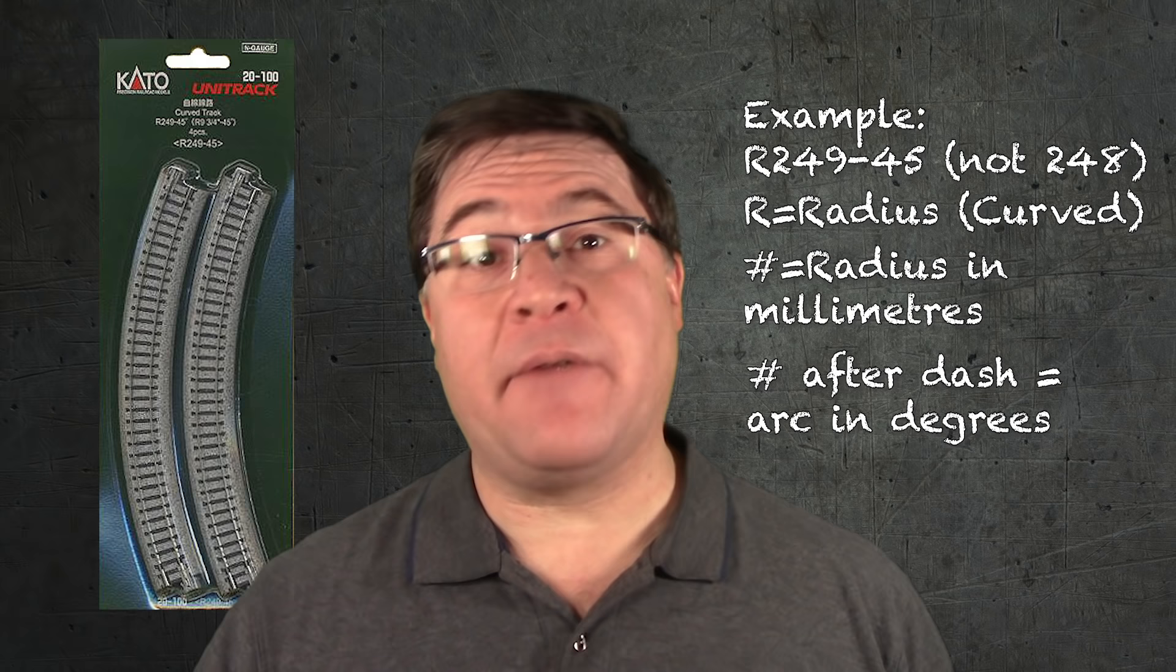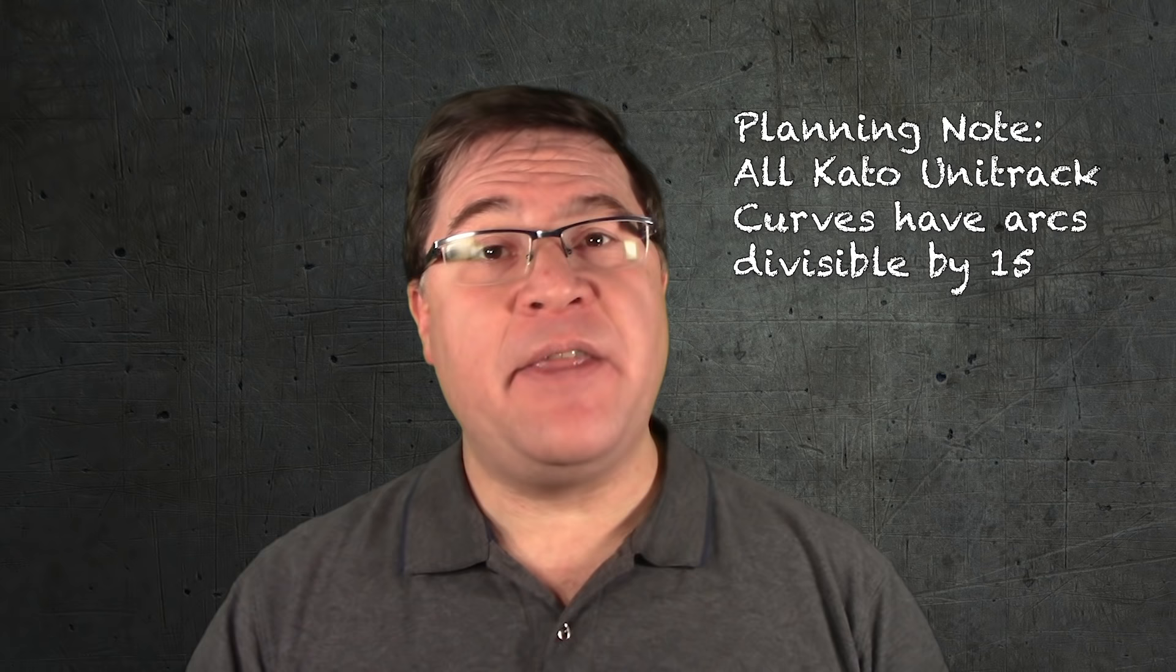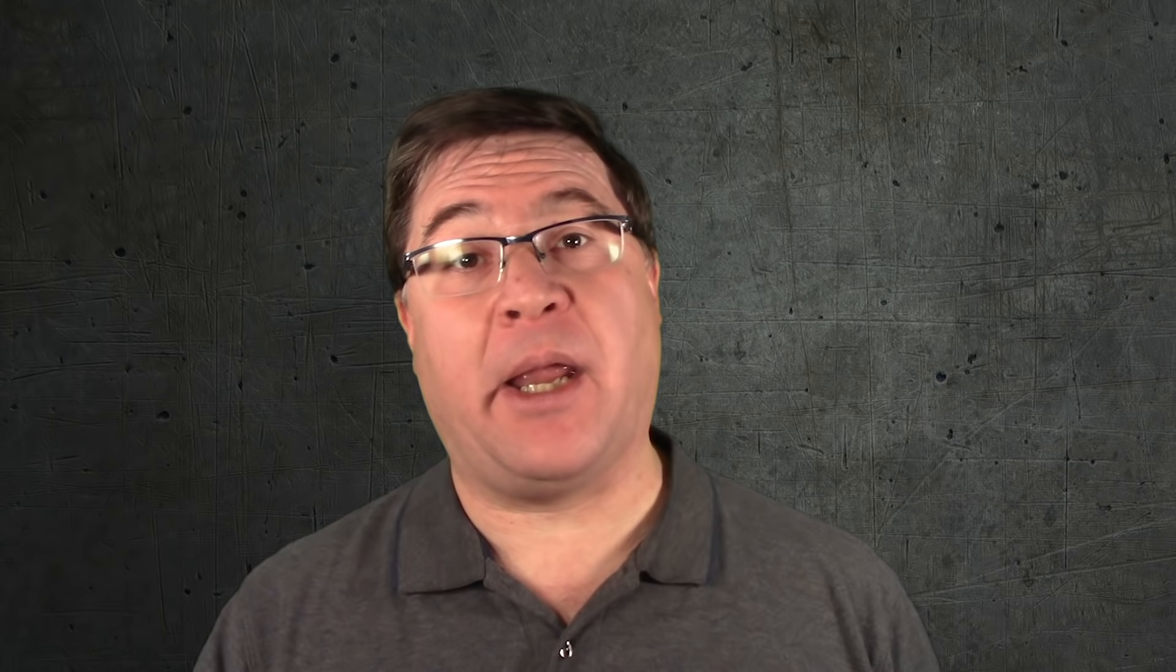Unitrack has many different lengths of straight tracks and curves, but the one consistent piece is that the arc of all the curves is divisible by 15. So the arcs are 15, 30 and 45 degrees. And this makes planning for curves pretty straightforward. If you're having the track turning 180 degrees at the end of the loop, as long as the combined arcs of the individual pieces of track add up to 180, you're good.